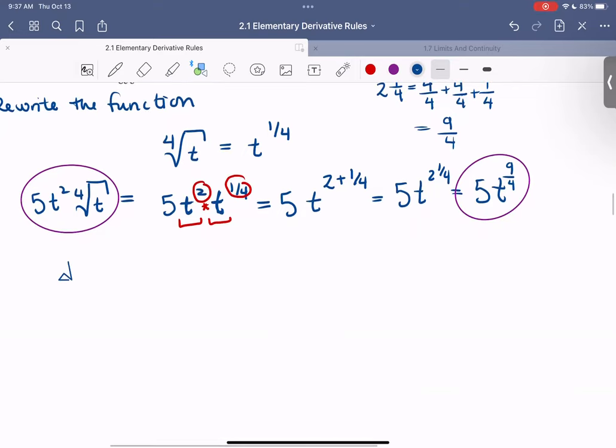Now we're going to compute the derivative with respect to t. It's tempting to always want to use x's, but we don't always have x as our variable. The derivative with respect to t of 5t² times the 4th root of t is equivalent to the derivative of this function here. What rule are we going to use?